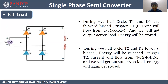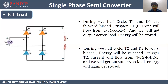During the negative half cycle, T2 and D2 will be forward biased. Before triggering T2, at the start of the negative half cycle, the inductor will dissipate the energy. After complete dissipation, we trigger T2, and current flows from T2 to R to L to D2 to the AC input supply. We get the output across the load and the inductor stores the energy again. Then during the positive half cycle, T1 and D1 will be forward biased. The inductor will dissipate its energy, we trigger T1, current flows again, and the inductor stores energy. So during one half cycle, inductor stores energy, and during the next half cycle it dissipates.